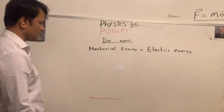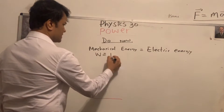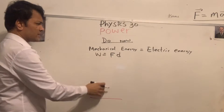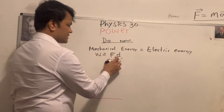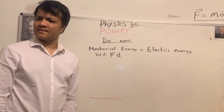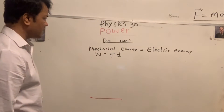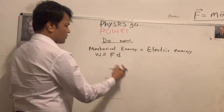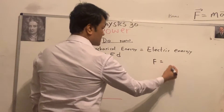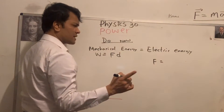Work W equals force times distance: W = fd. And electrical energy — the electric field E equals force over charge: E = F/q. Now, F equals... E over q? No — E equals F over q, so F equals Eq.